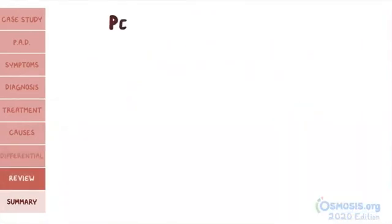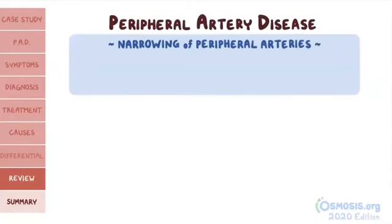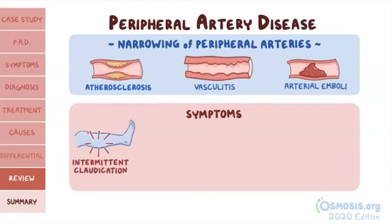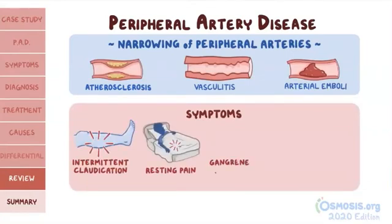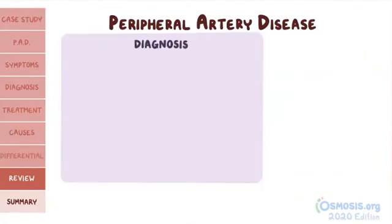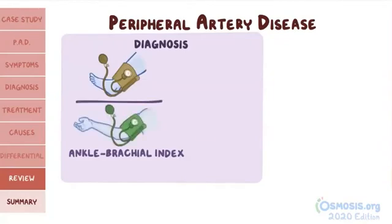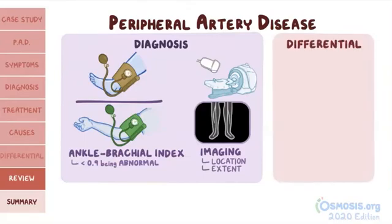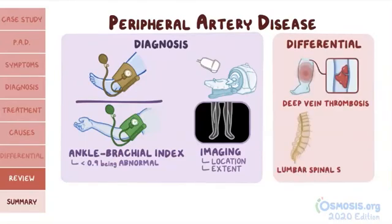As a quick recap, peripheral artery disease is narrowing of the peripheral arteries, usually because of atherosclerosis, but other causes include vasculitis and arterial emboli. Individuals typically present with a spectrum of symptoms ranging from intermittent claudication to resting pain to eventually developing gangrene and ulcers. Other symptoms of chronic ischemia include hair loss in the affected area, dry skin, decreased peripheral pulses, and loss of sensation. The diagnosis is initially made by performing an ankle brachial index, with an ABI less than 0.9 being abnormal. Imaging with ultrasound or CT angiography further determines the location and extent of arterial narrowing. Important differential diagnoses to consider include deep vein thrombosis and lumbar spinal stenosis.